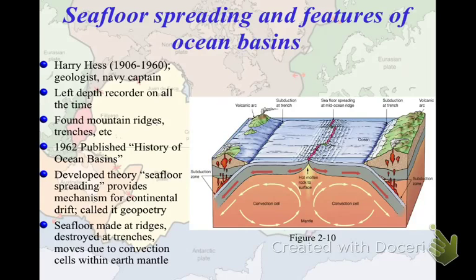We finished paleomagnetism in the last video. This video is going to be about finishing out the first half of the chapter. We talked about Wegener and why poor Wegener was picked on — he had this great idea and all this evidence, but he couldn't provide a mechanism for how continental drift occurred.